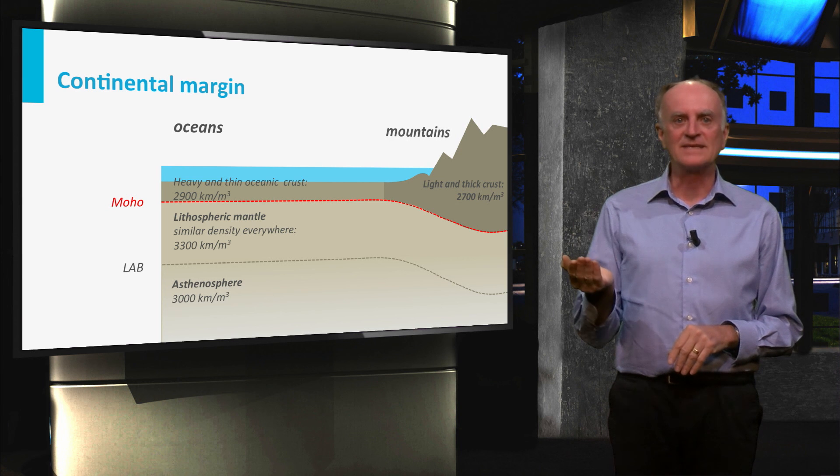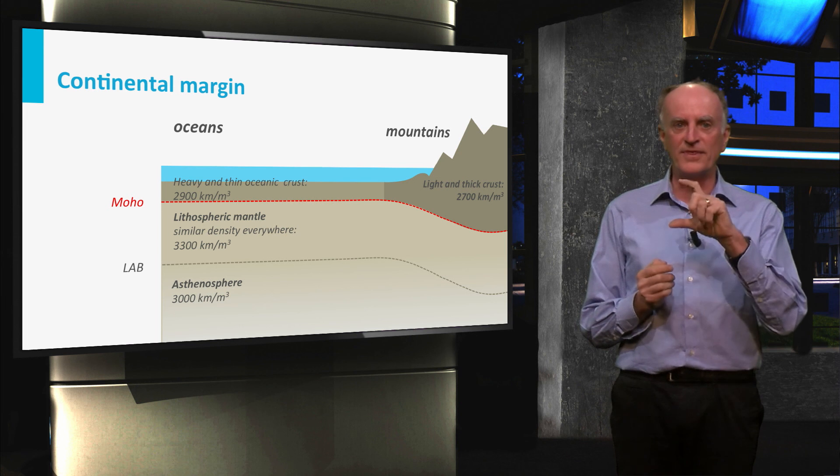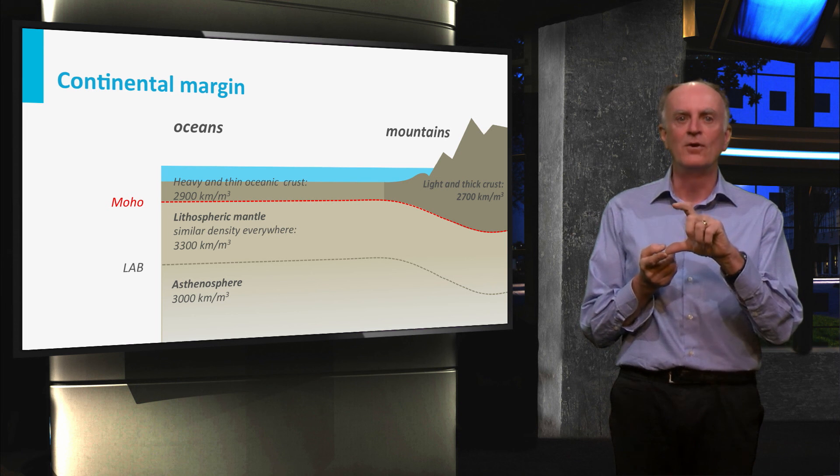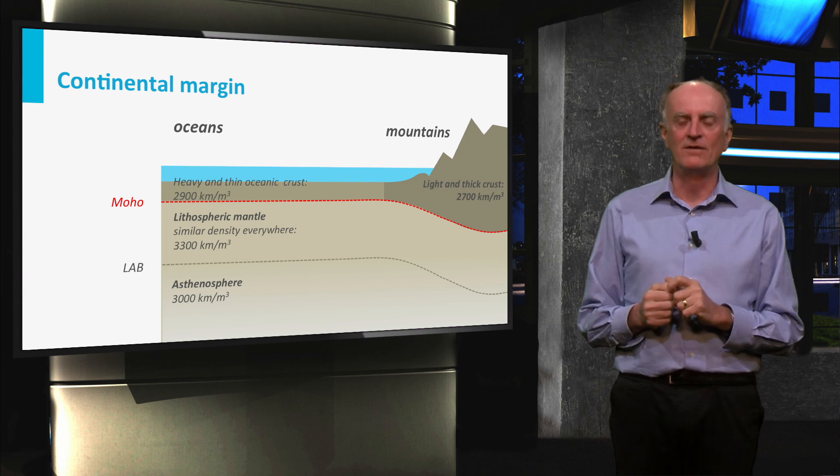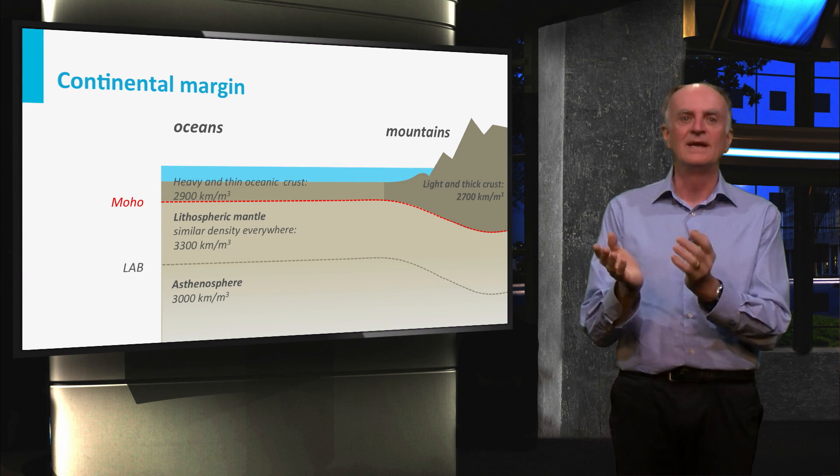On the right-hand side of the picture, on the contrary, you see that the lithosphere is composed of a thick, low density layer overlaying the mantle. Obviously, this results in a very high topography, the mountains, and a deep root.